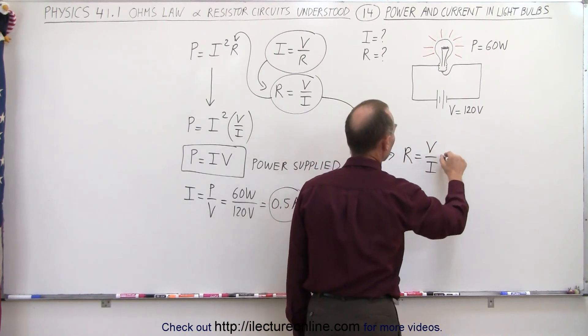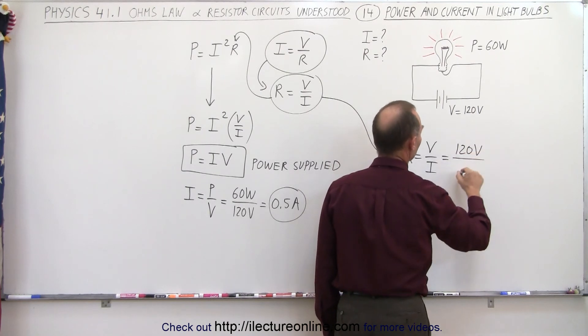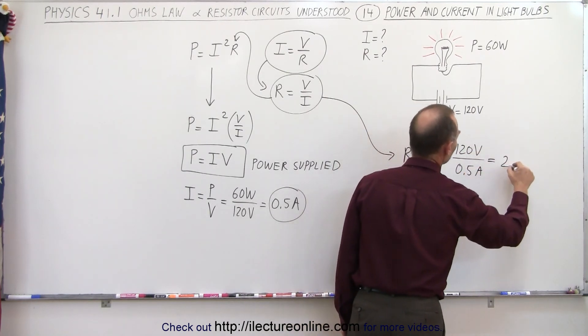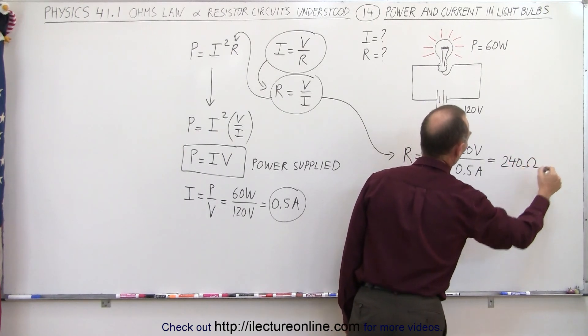That's equal to 120 volts divided by a current of 0.5 amps, which means that this light bulb has a resistance of 240 ohms.